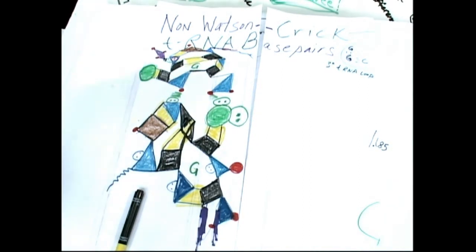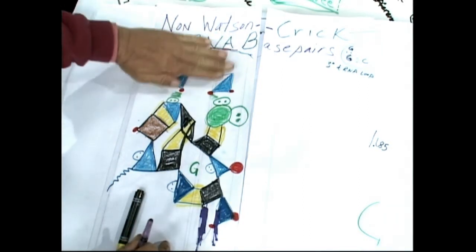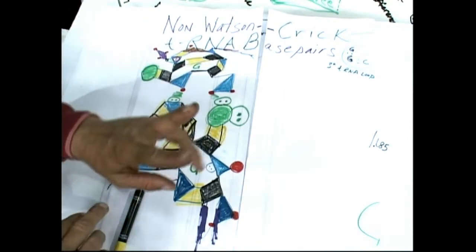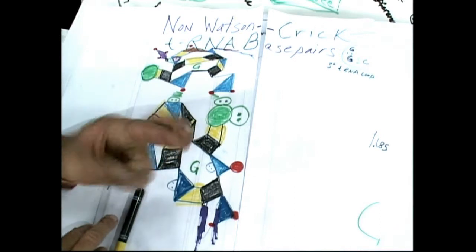To show you what we did, we drew two guanines here. Okay, so we've got a guanine up here, the guanine over here. And what happens with the transfer RNAs is they twist around.